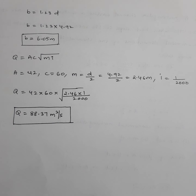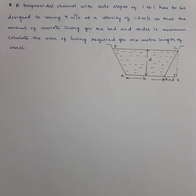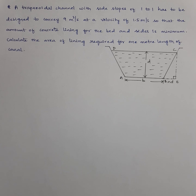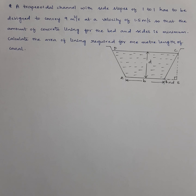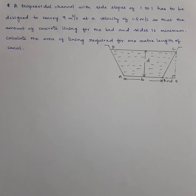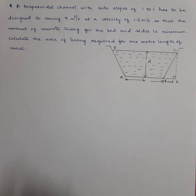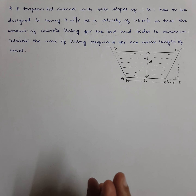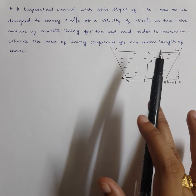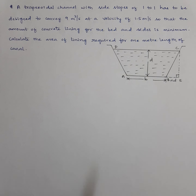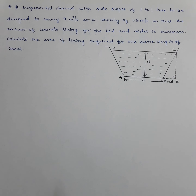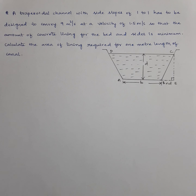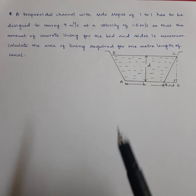Let's see another model related to most economical trapezoidal section. A trapezoidal channel with side slope 1:1 has to convey 9 m³/s at velocity 1.5 m/s so that concrete lining for bed and sides is minimum. Calculate the area of lining required for 1 meter length. Although not explicitly stated, minimum lining means minimum wetted perimeter, which corresponds to most economical section.